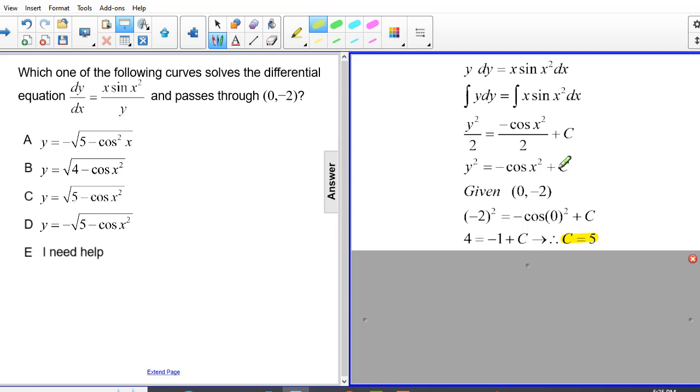Knowing that c equals 5, I go to my original equation and I replace c with 5. And I used the commutative property to rewrite it as y squared equals 5 minus cosine x squared.